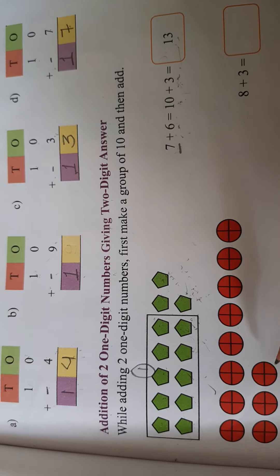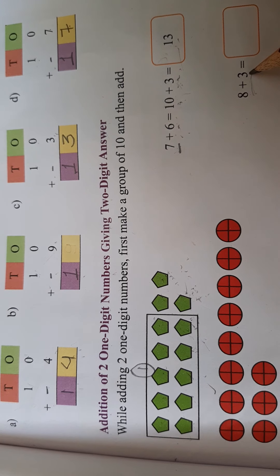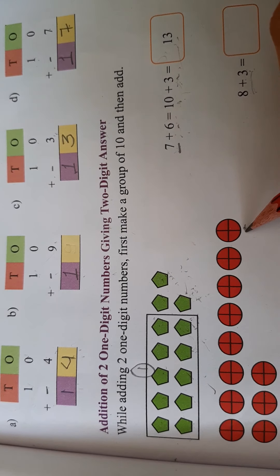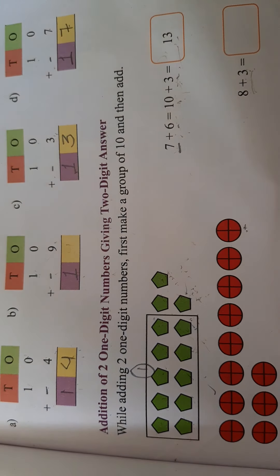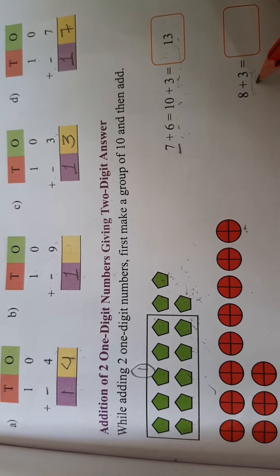Now let's do the second example. What is the sum? The sum is 8 plus 3. So on the top side, how many shapes will be here? 8. And on the lower side, how many shapes will be here? 3. Because our question is 8 plus 3.